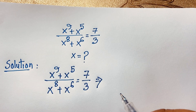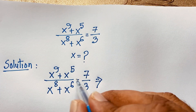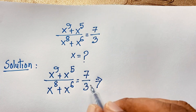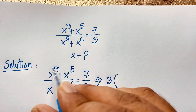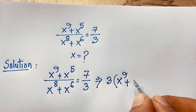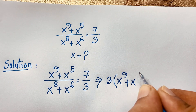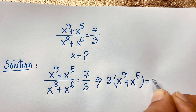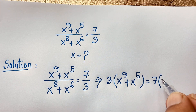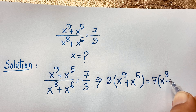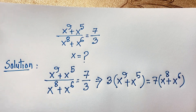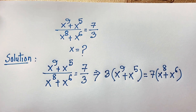Now if I cross-multiply, it will be 3 times x to the power 9 plus x to the power 5, is equal to 7 times x to the power 8 plus x to the power 6.